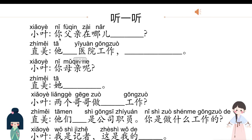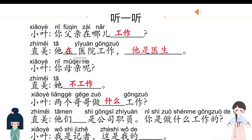Let's check the answers. 你父亲在哪儿工作? Answer: 他在医院工作，他是医生. 你母亲呢？他不工作. 两个哥哥做什么工作？Fill in 都 — 他们都是公司职员. Last blank: 我是记者，这是我的名片. Note: 不 is a negative marker — 她不工作 means she doesn't have a job. 都 means 'both' — 他们都是公司职员, both of them are company clerks.